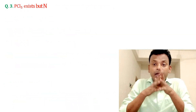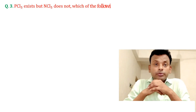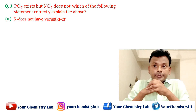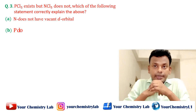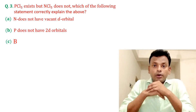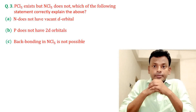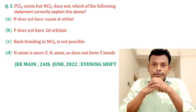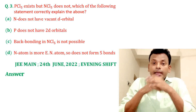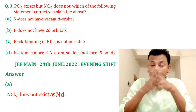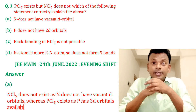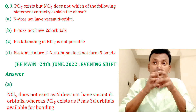Question number three: PCl5 exists but NCl5 does not. Which of the following statement correctly explains this? Options A, B, C, and D are given. Answer: option A is correct. NCl5 does not exist as nitrogen does not have vacant d-orbitals, whereas PCl5 exists because phosphorus has 3d orbitals available for bonding. So option A is the correct answer.